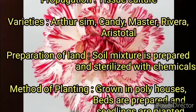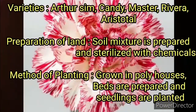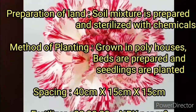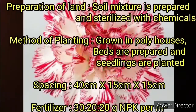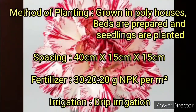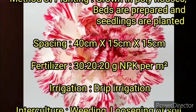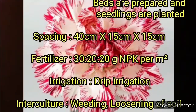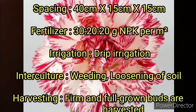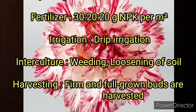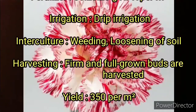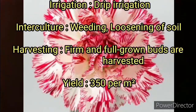Preparation of land is done by mixing the soil and sterilizing it with chemicals. Method of planting is done by growing in a poly house — beds are prepared and seedlings are planted. Spacing is 40cm x 15cm x 15cm. Fertilizer dose is 30 x 20 x 20 grams NPK per meter square.